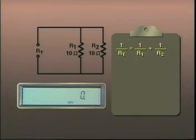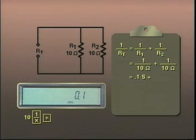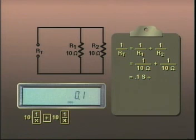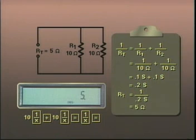Applying the formula for total parallel resistance to this circuit, we have the reciprocal of 10 ohms plus the reciprocal of 10 ohms. Using our calculator, we enter 10 and press the reciprocal key — 0.1 is displayed. Then plus is pressed, then we key in the second 10 and press the reciprocal key. Again, 0.1 is displayed. When equals is pressed, the total conductance, 0.2 siemens, is displayed. The total resistance then equals the reciprocal of 0.2 siemens, so the reciprocal key is pressed again and the calculator displays 5 ohms, the total resistance.